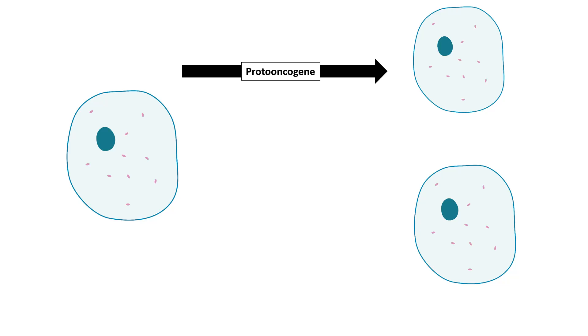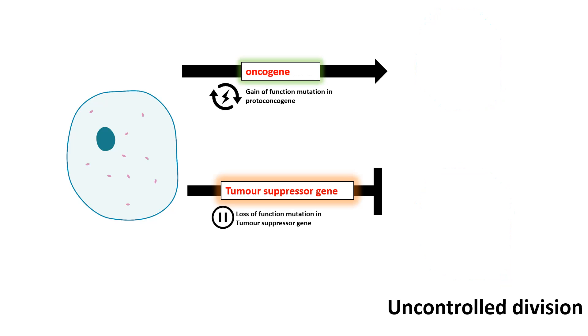So simply, proto-oncogenes are those genes which are absolutely necessary for normal cell growth, proliferation, and division. There are other types of genes known as tumor suppressor genes. Tumor suppressor genes, as the name suggests, they suppress the tumor growth or they suppress the uncontrolled proliferation or growth of the cells.